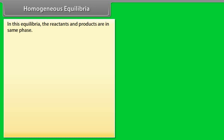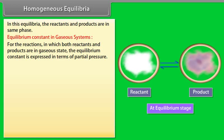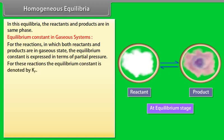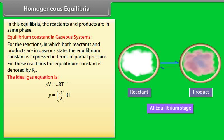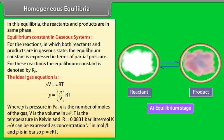Homogeneous Equilibria: In this equilibria, the reactants and products are in the same phase. Equilibrium constant in gaseous systems: For reactions in which both reactants and products are in gaseous state, the equilibrium constant is expressed in terms of partial pressure and is denoted by Kp. From the ideal gas equation PV = nRT, we get P = (n/V)RT. Here P is pressure in Pascal, n is the number of moles, V is volume in m³, T is temperature in Kelvin, and R = 0.0831 bar·liter per mole·Kelvin. Since n/V can be expressed as concentration C in mole per liter, P = CRT.